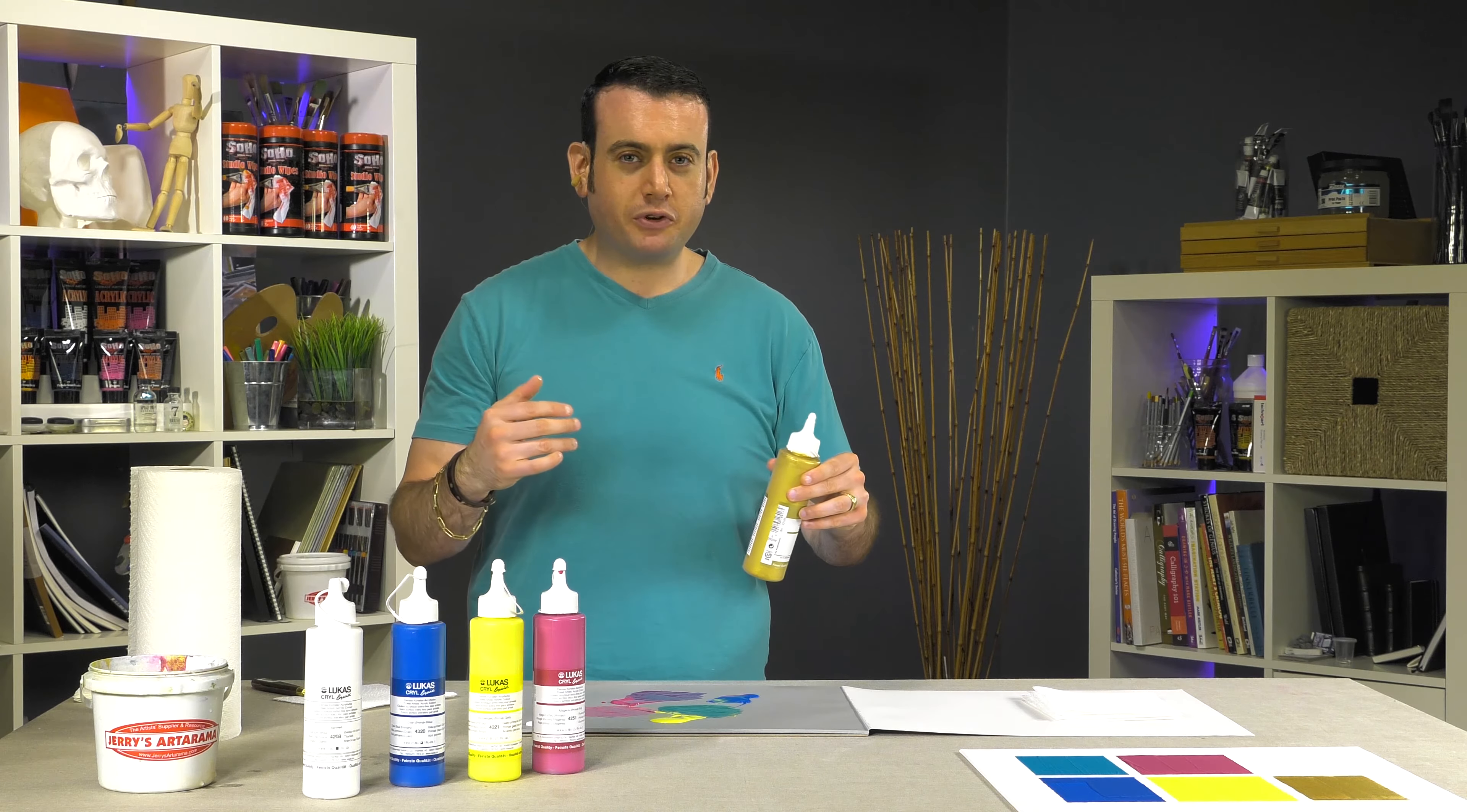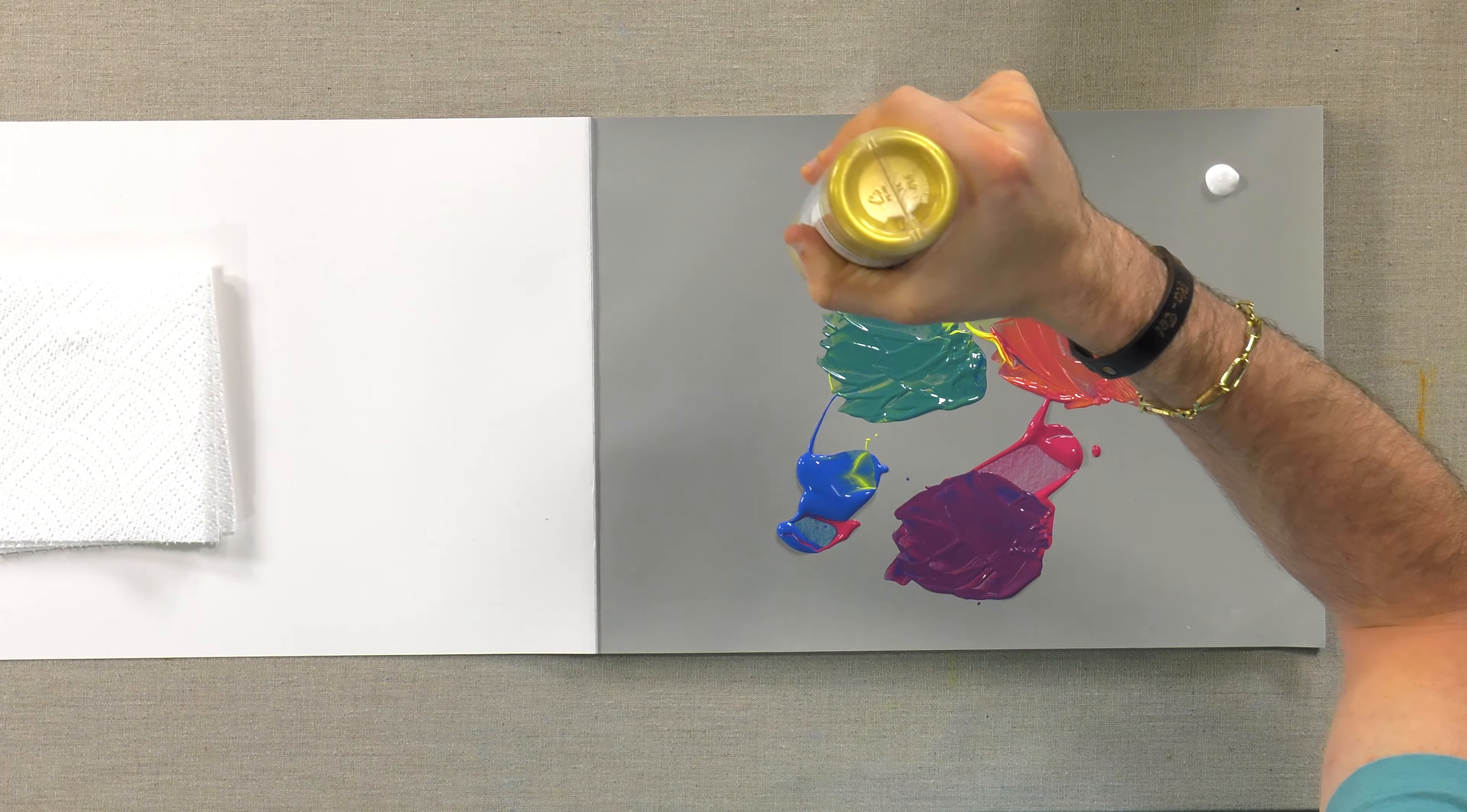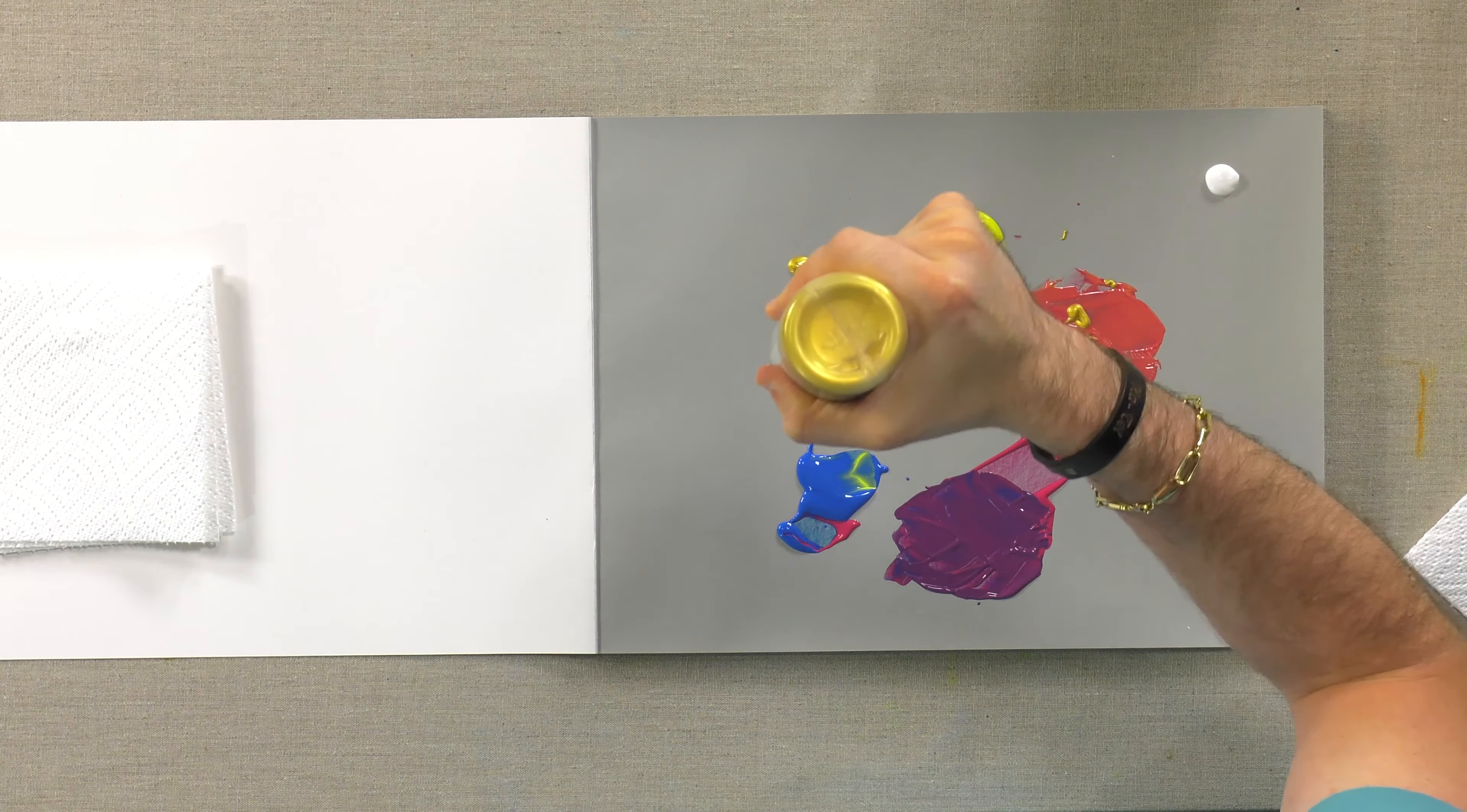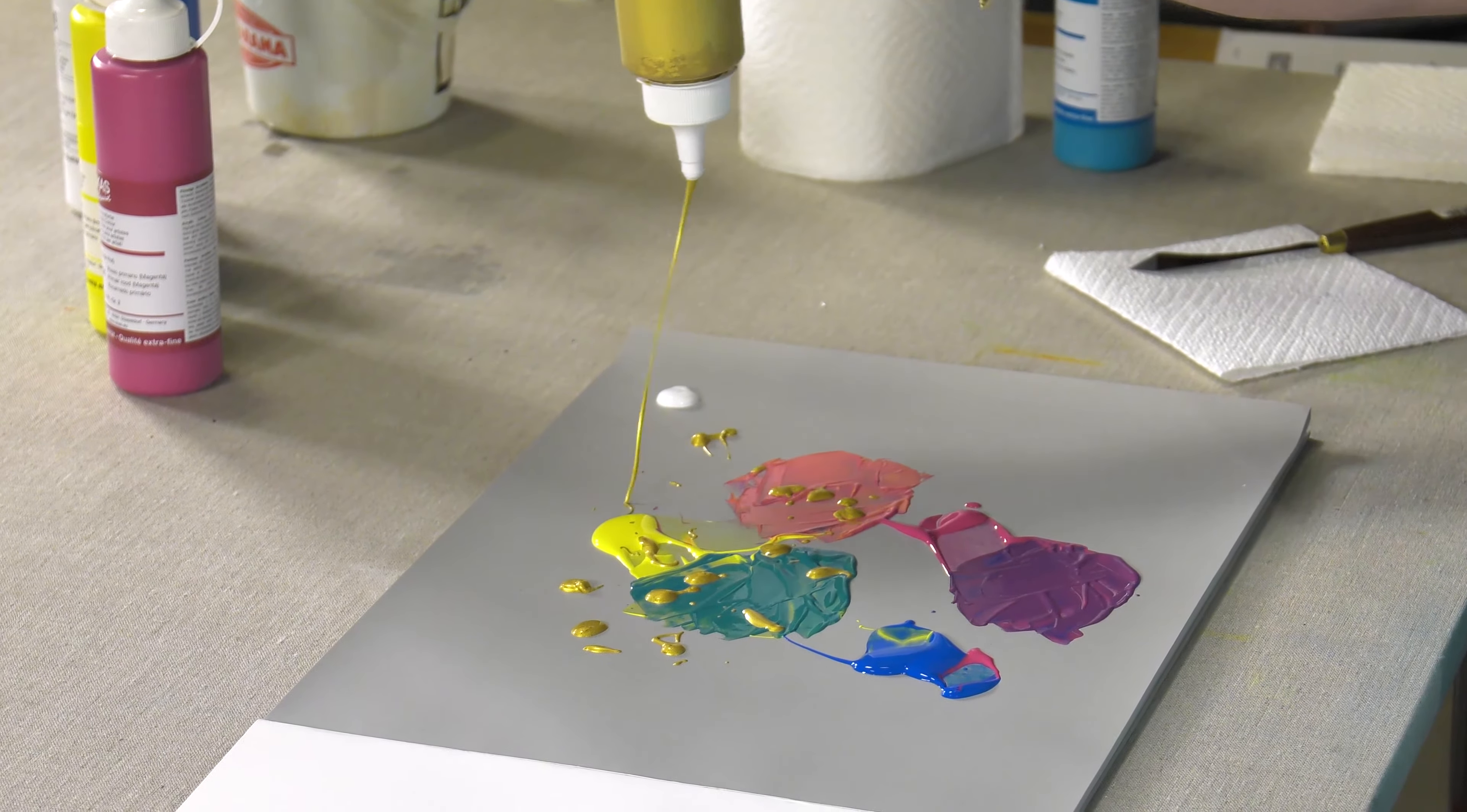You can create dripping or splattering effects. You can get all Jackson Pollock with it if you want. You can paint directly out of the tube.